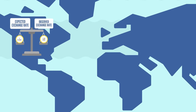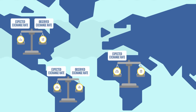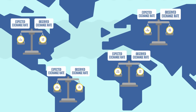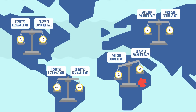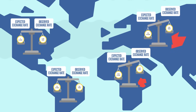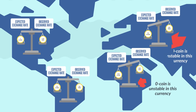Now that we have all the needed data, the blockchain can easily determine in real time if the exchange rate observed is different from the rate provided by the blockchain based on water price observation. It can then determine which currency is stable or not.